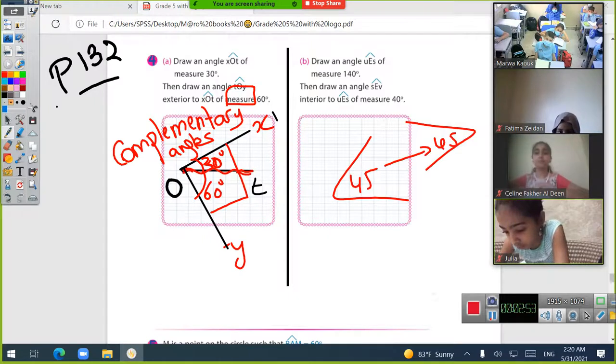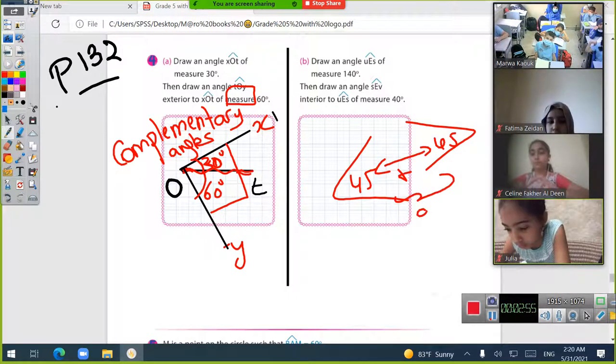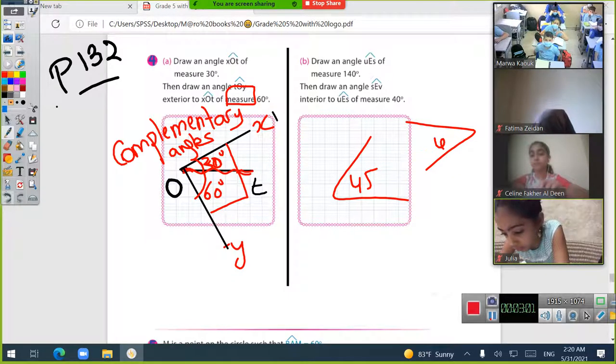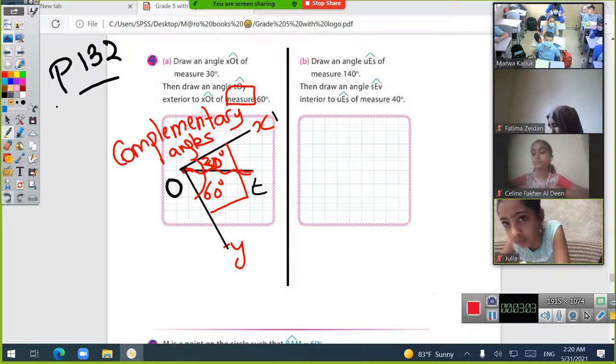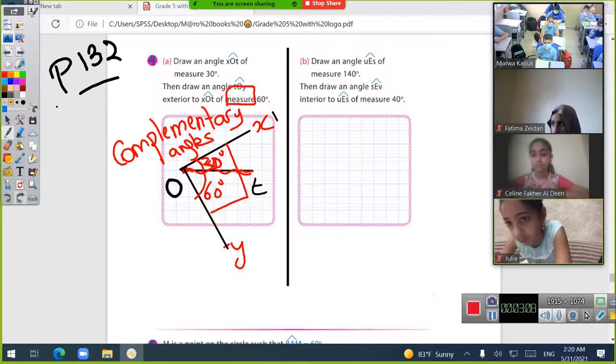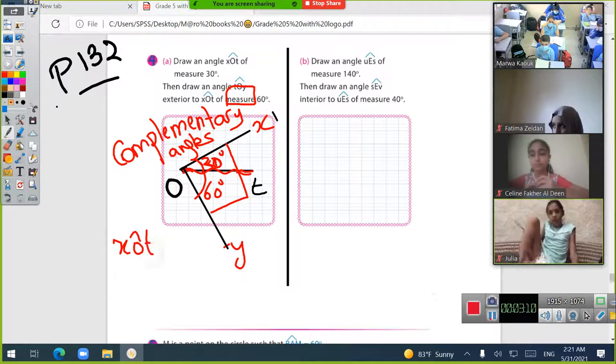Their sum is 90, so we call them complementary angles. Every two angles, if their sum is 90, are complementary. It's XOT plus TOI.